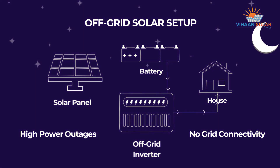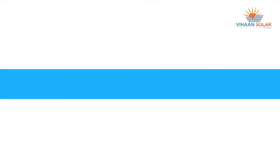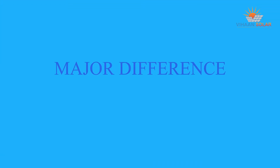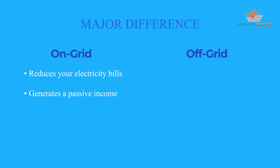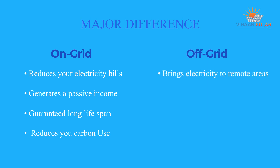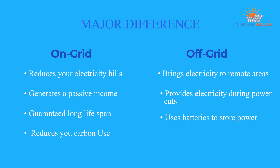The off-grid system generates enough power that can be stored and used when there is no grid supply or at night. The major differences: on-grid reduces your electricity bills, generates passive income, has a guaranteed long lifespan, and reduces your carbon footprint. Off-grid brings electricity to remote areas, provides electricity during power cuts, and uses batteries to store power.